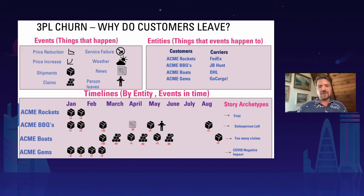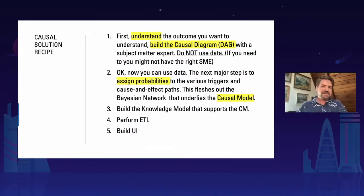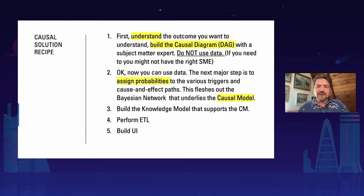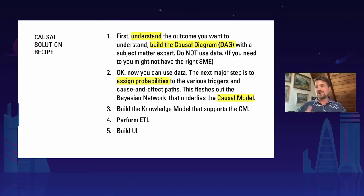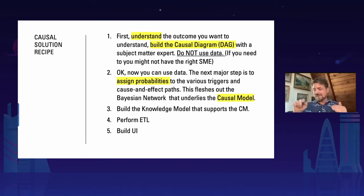The very first step is you need to understand how to build a causal diagram. This is totally against what most data scientists are doing right now — we're saying don't use data first. Data comes in later, but first start with understanding what's causing what in the diagram. Sit down with subject matter experts and ask them what kinds of things are happening in your world that are causing this behavior. Then there's a formal process of modeling that out in a directed acyclic graph that helps you understand what factors or events are causing some outcome.